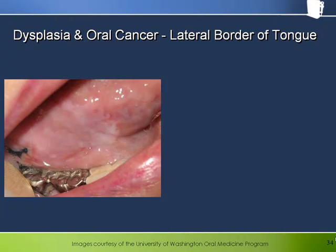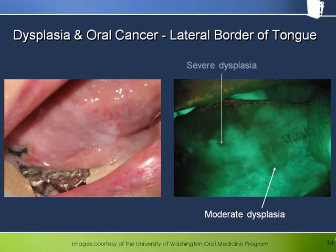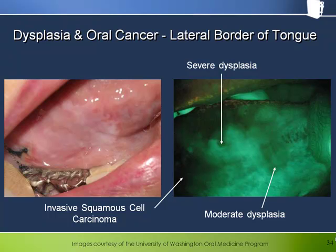Here we have a large area of leukoplakia on the side of the tongue, but this time the lesion morphology appears different with fluorescence compared to white light. Under Velscope, parts of this area show up as brighter due to keratin fluorescence, but the areas indicated by the arrows are, to varying degrees, darker under Velscope. The slightly less dark area on the right-hand side was found to be moderate dysplasia. The smaller, very peculiarly shaped darker area more toward the top of the tongue was severe dysplasia, and the very dark area posterior to these two areas was invasive squamous cell carcinoma.